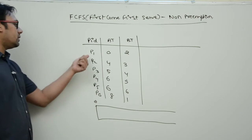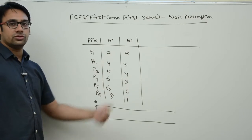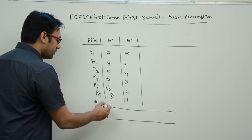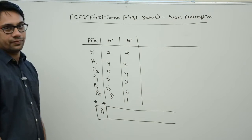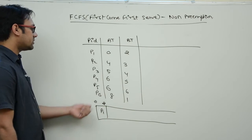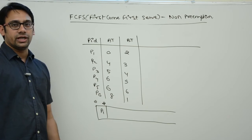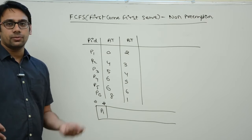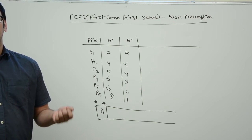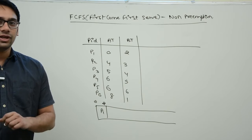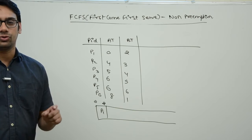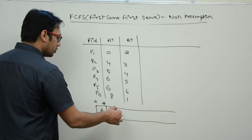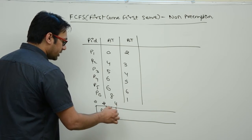Since p1 arrived at time 0, we give the CPU to p1 for 2 units of time. The next process arrives at time 4. From time 0 to 2 we had a process to execute, but from time 2 to 4 we don't have any other process to execute, so the system remains idle.